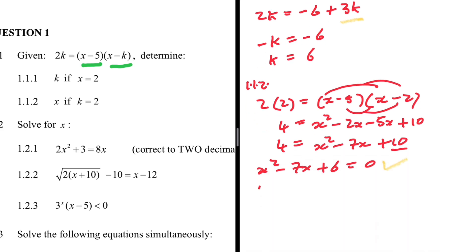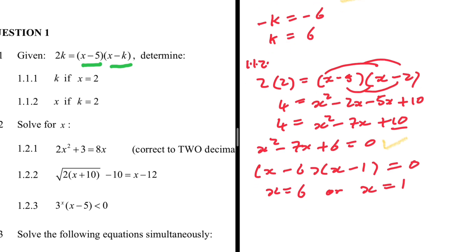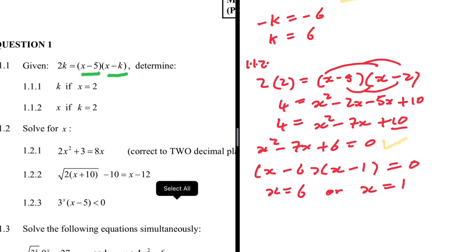We need to factorize x² - 7x + 6 = 0. We need two numbers that multiply to give 6 and add to give -7, which are -6 and -1. So x = 6 or x = 1. Those are the values of x if k = 2. That is 1.1.2.